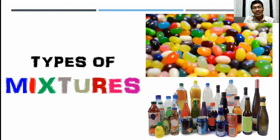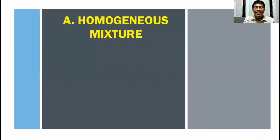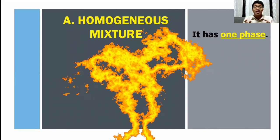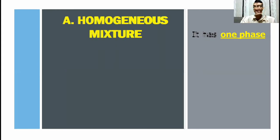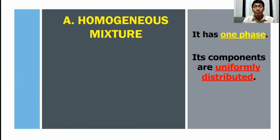Let's now discuss the types of mixtures. The first type of mixture is called homogenous mixture. What do we mean by homogenous mixture? This type of mixture has one phase. Ano ibig sabihin ng one phase? Ibig sabihin, hindi natin nakikita ang components nito. We said earlier that a mixture is composed of two or more substances. But for the case of homogenous mixture, we cannot see or distinguish its components. We only see a single phase. Also, its components are uniformly distributed.